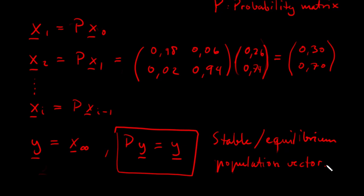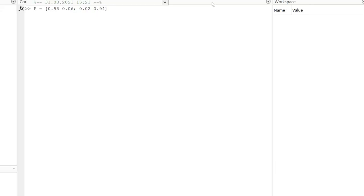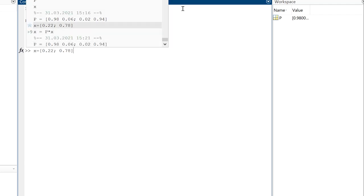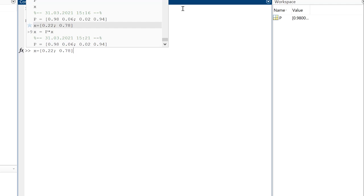So I will illustrate it a little bit further also using MATLAB. So stay with me a bit more. So here I have entered the probability matrix in MATLAB. And if I am now entering the x value, the initial x value or the population vector like this, I could calculate the next year by just multiplying p and x.